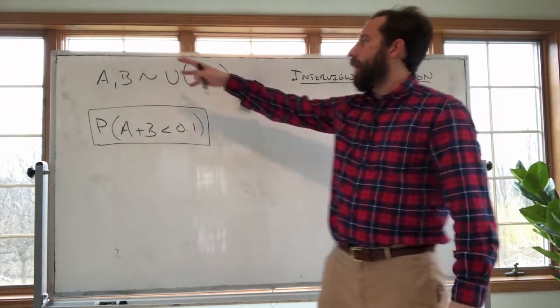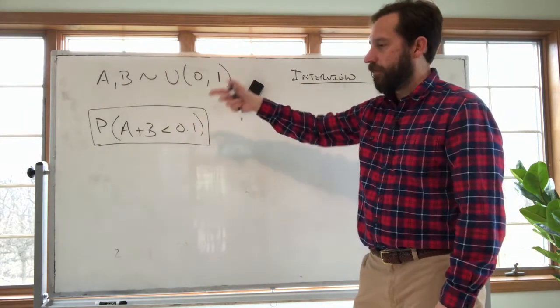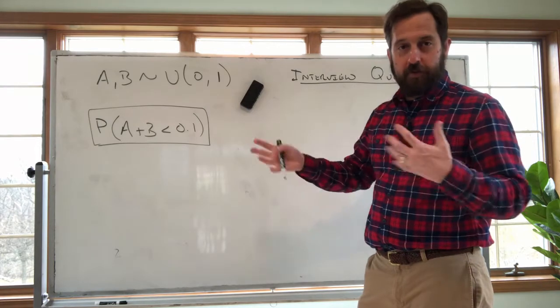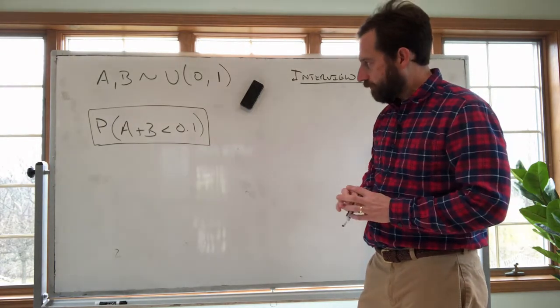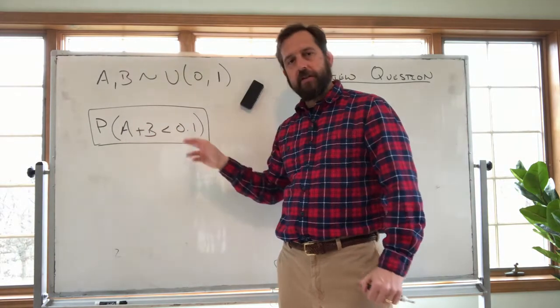So the question is: you have two random variables A and B, both uniformly distributed on the interval from 0 to 1 and they're independent, there's no correlation between the two. The question is what's the probability that the sum A plus B is less than 0.1.